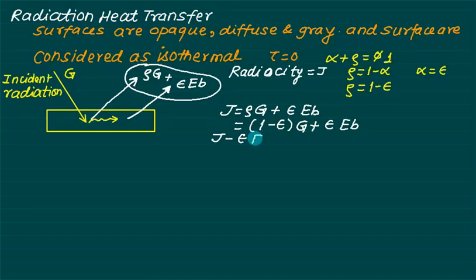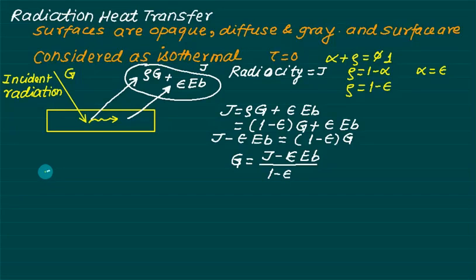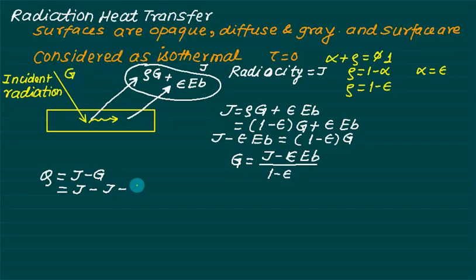From this equation, J − εEb = (1 − ε)G. Solving for irradiation G: G = (J − εEb) / (1 − ε). The net amount of energy leaving the surface Q equals the radiosity J minus the incident irradiation G, so Q = J − G.